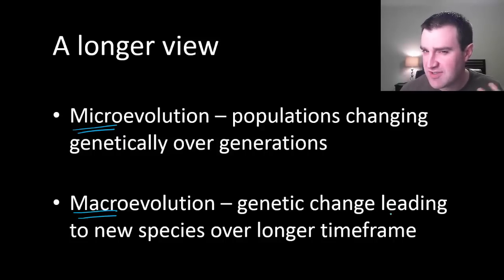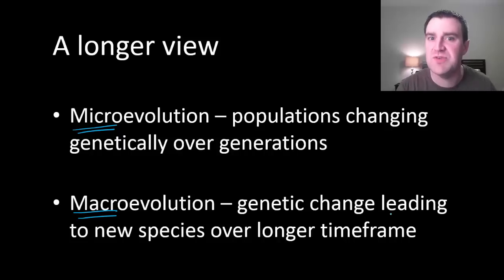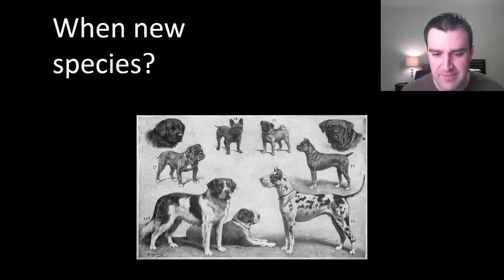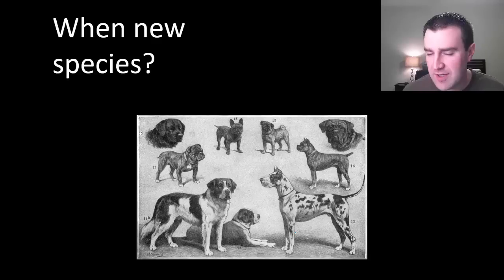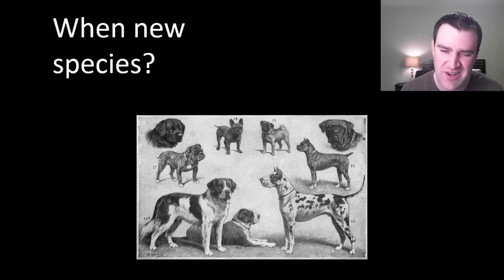Maybe over hundreds, thousands, or even tens of thousands of generations, a population might become so genetically different that we consider it a different species from other groups that it used to be the same species with before. A lot of students might first answer that a group becomes a new species when it looks really different from what it used to look like. But dog breeds can certainly look very different from each other and yet they're all still dogs, and rightfully so.